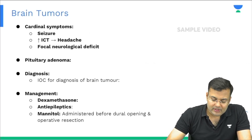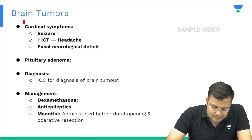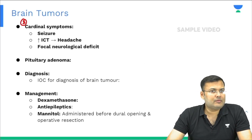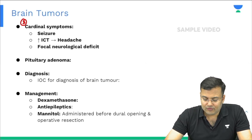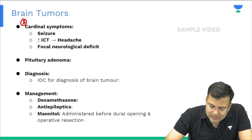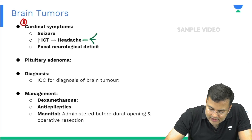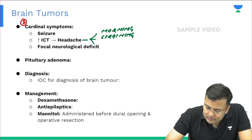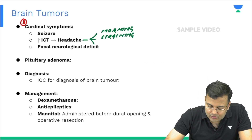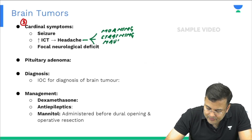Now the special features of brain tumor. There are three cardinal symptoms: first, seizures; second, increased intracranial tension (space-occupying lesion) leading to headache — this is morning headache, worse in the morning and on straining, and associated with nausea and vomiting; third, focal neurological deficit.